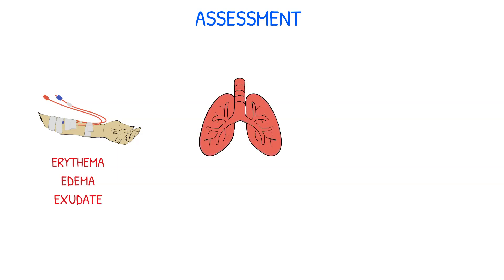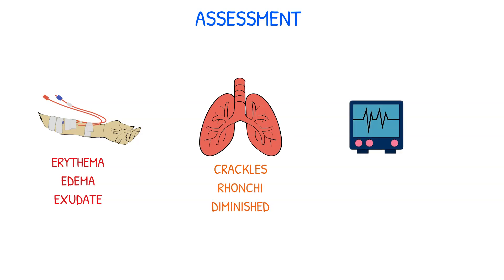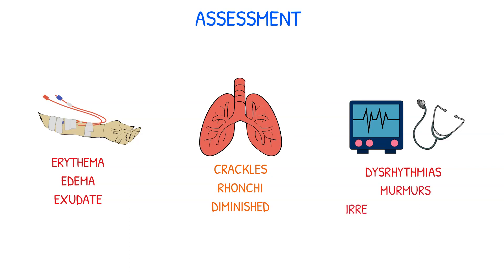Monitor the patient's lungs for crackles, rhonchi, or diminished breath sounds. Assess the patient's ECGs for dysrhythmias due to electrolyte imbalances, especially potassium. You should also auscultate for murmurs and an irregular heartbeat.